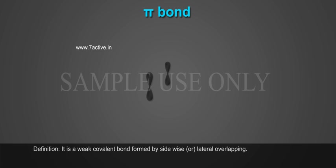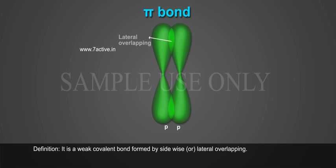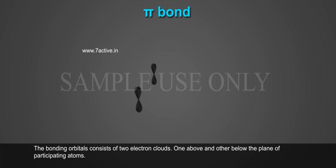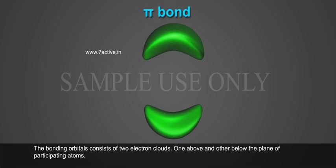Pi Bond Definition: It is a weak covalent bond formed by sidewise or lateral overlapping. The bonding orbitals consist of two electron clouds, one above and other below the plane of participating atoms.